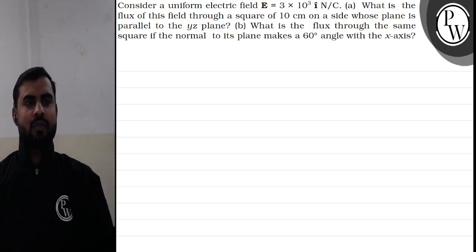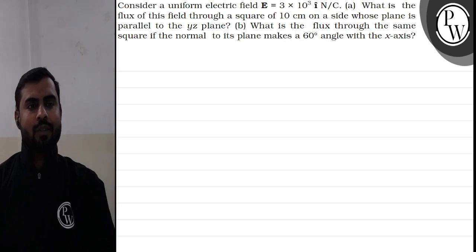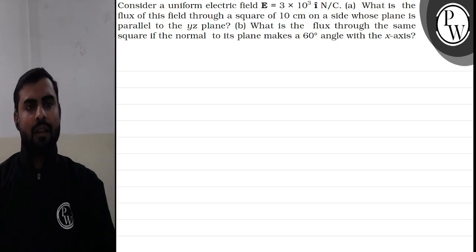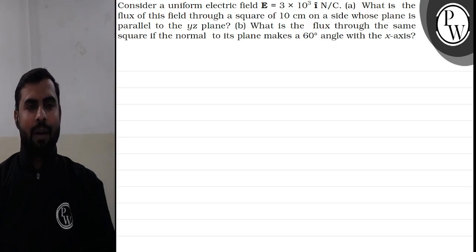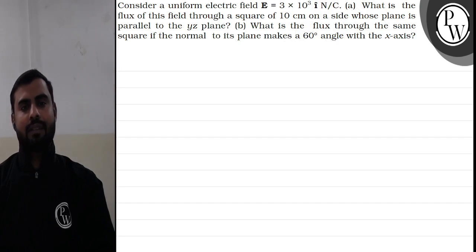Hello everyone, let us read this question. Consider a uniform electric field E equal to 3 into 10 raise to the power 3 i-hat Newton per coulomb. What is the flux of the field through a square of 10 centimeter on a side whose plane is parallel to the YZ plane? And in the second part, what is the flux through the same square if the normal to its plane makes a 60 degree angle with the x-axis?